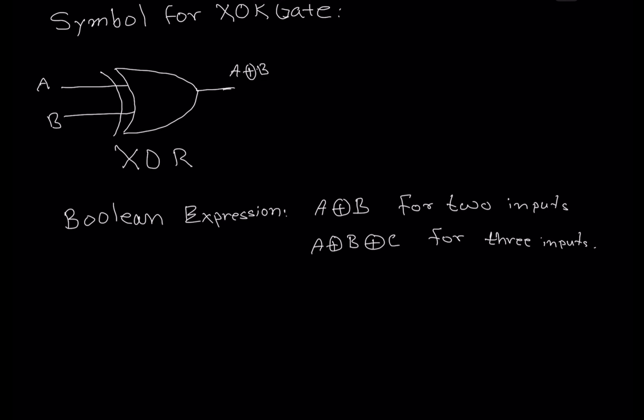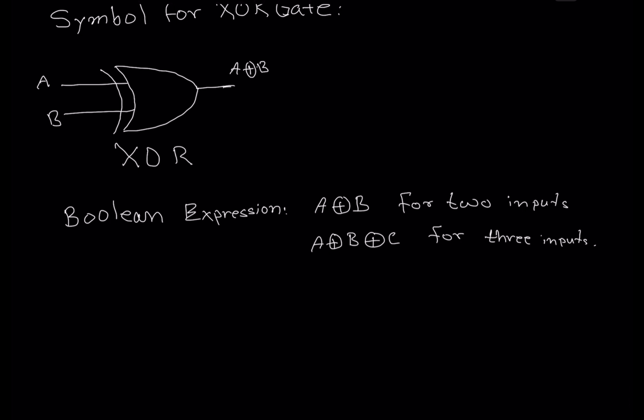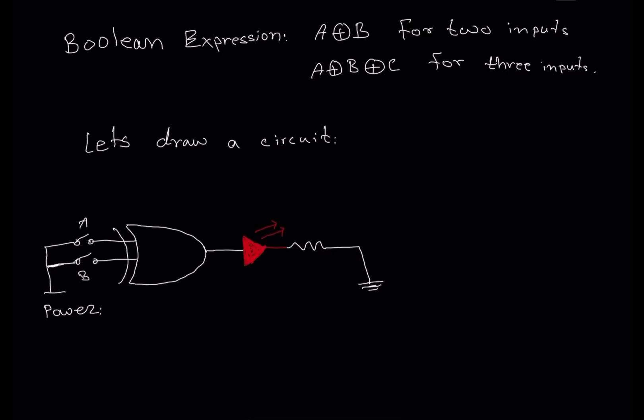Now let's talk about how we turn on these outputs. We said the outputs are only on if we have an odd number of inputs high. So for a two-input XOR gate, if any one input is on — only one, an odd number — the output will be on. If an even number of inputs are on, the output will be low or off. Let's draw a circuit. In this circuit, the LED light will only be on if we have one of the inputs on.